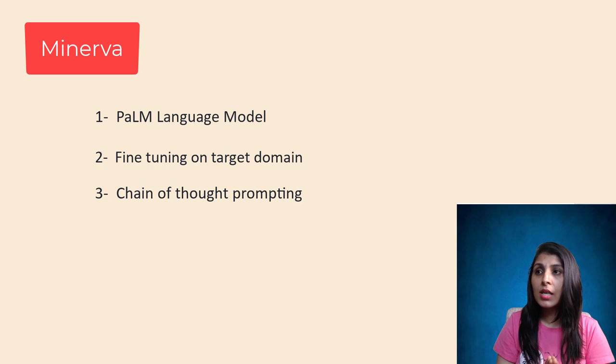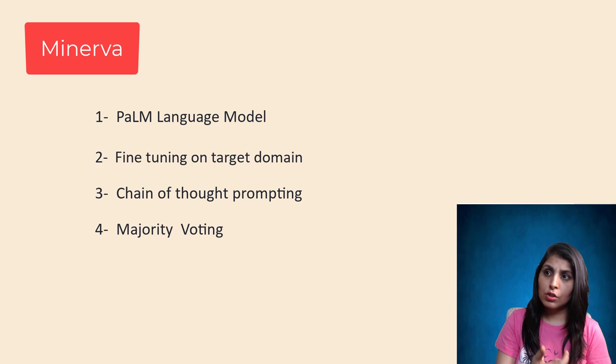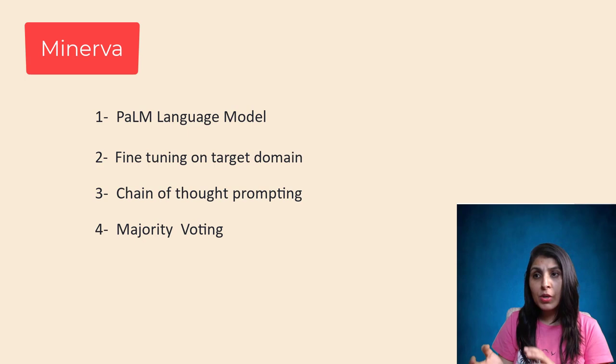Like most language models, Minerva assigns probability to different possible outputs. When answering a question, rather than taking a single solution, multiple solutions are generated. The steps to solve the problem are different in each solution, but the final answer is mostly the same. Minerva uses majority voting on these solutions and takes the most common result as the conclusive final answer.